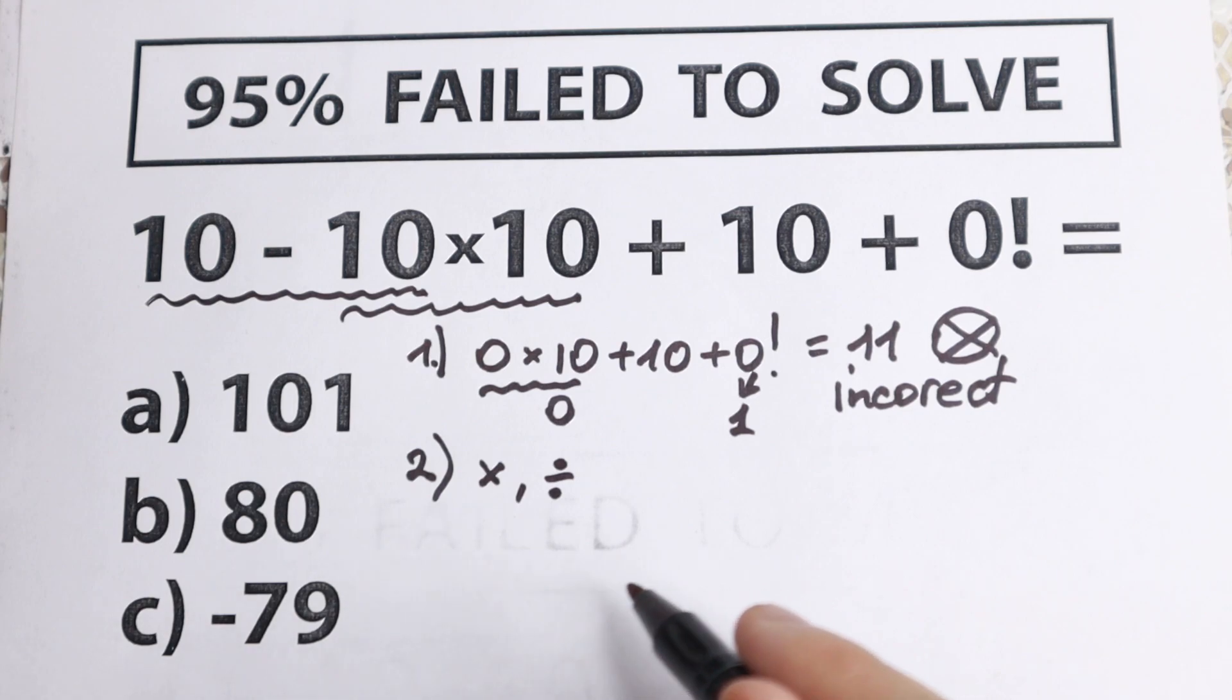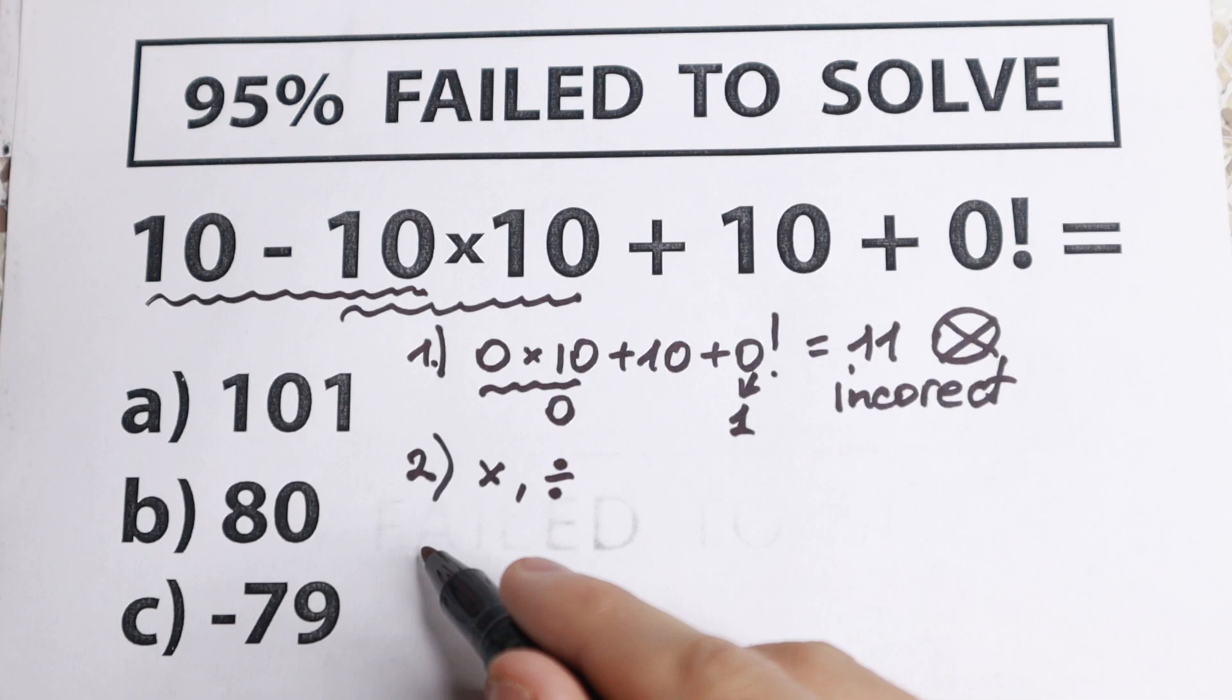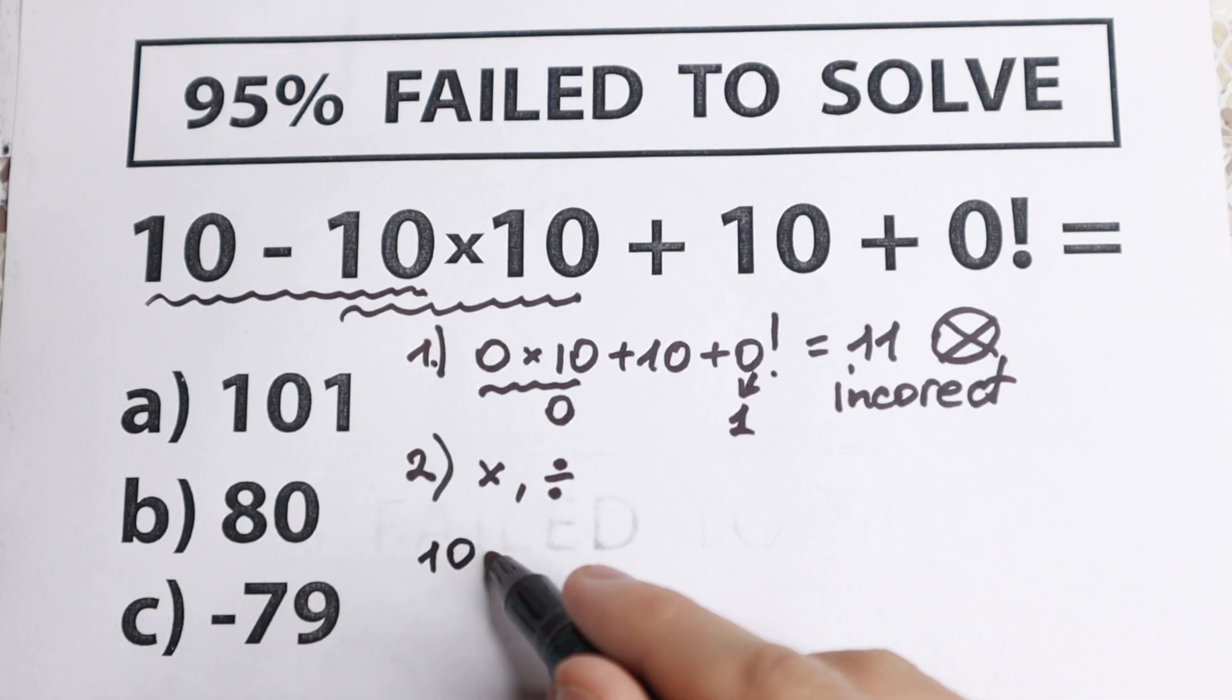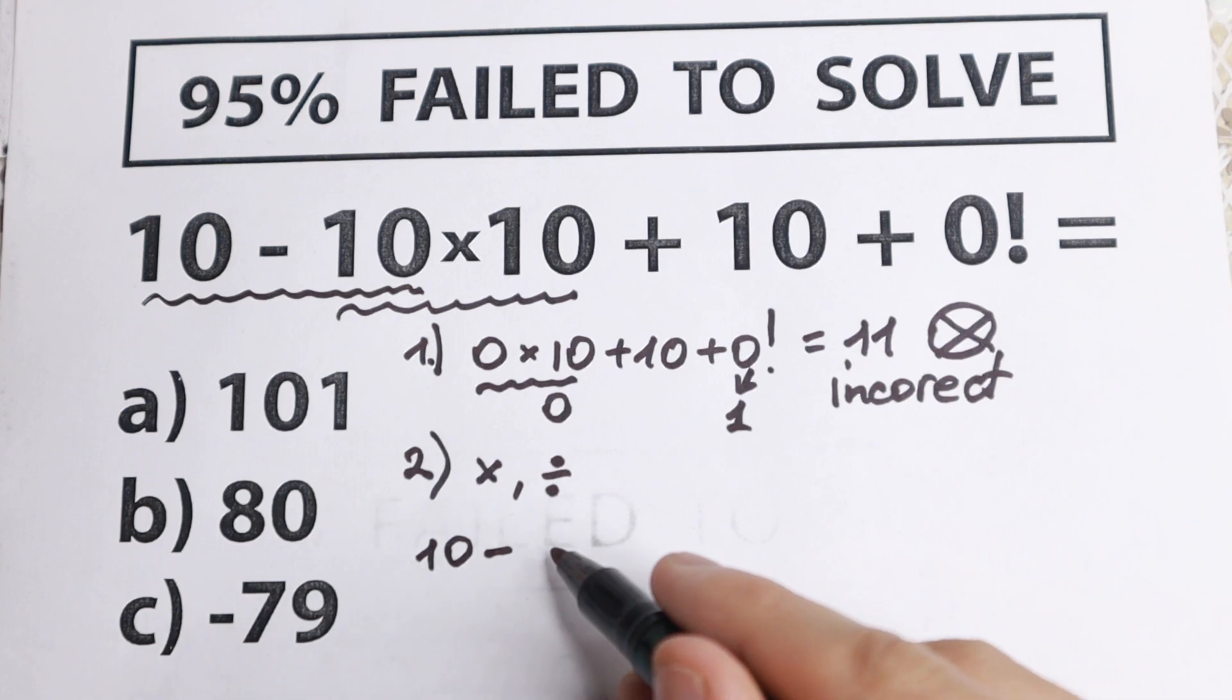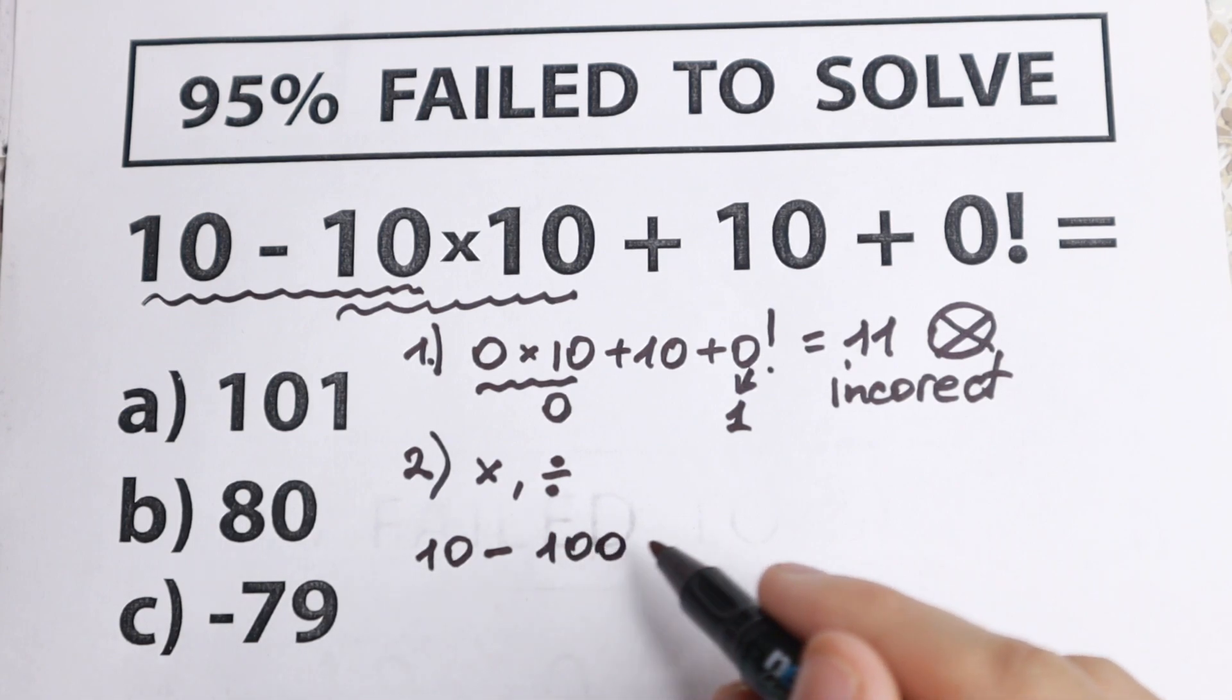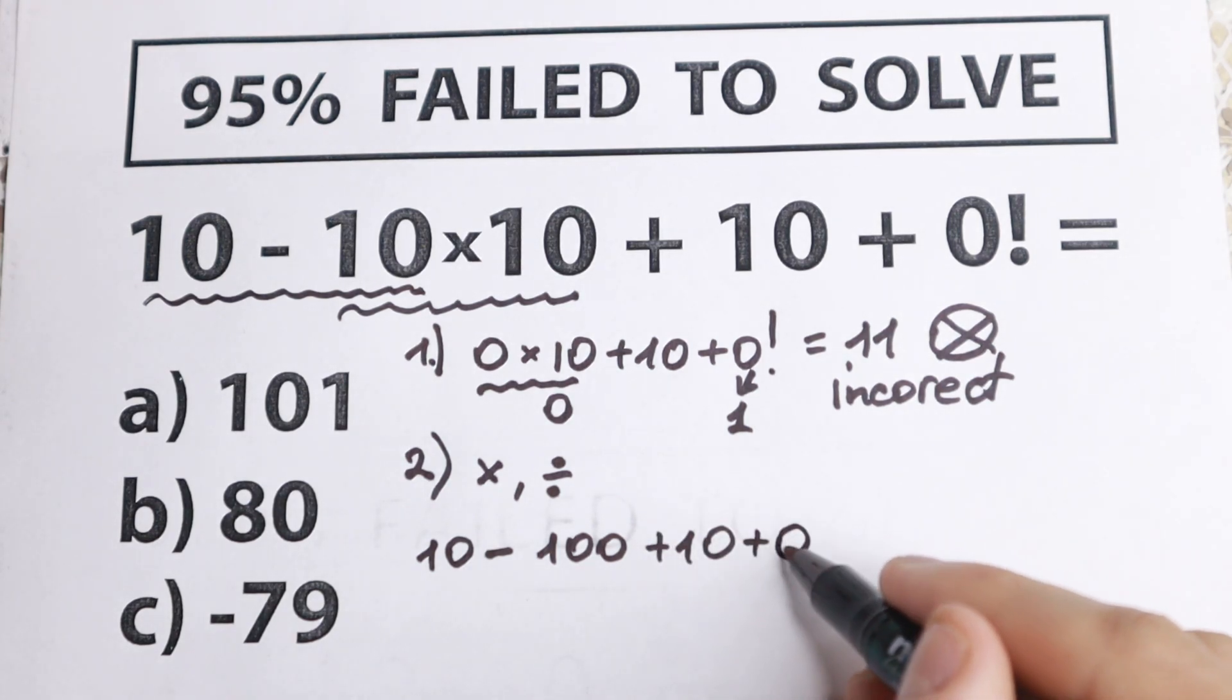Let's start with this one. Of course, if we don't have any parentheses, let's start with multiplication. So we have 10 at first in the beginning. So 10 minus 10 times 10. What will it equal? It will equal 100. So 10 minus 100, and we're left with plus 10 and plus 0 factorial.